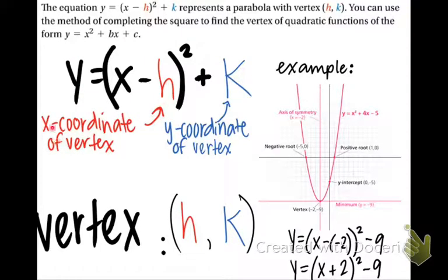The h value is the x coordinate of the vertex and the k value is the y coordinate of the vertex. Please take note that this negative sign is built into the formula. So if you see a negative number here, that h value is actually positive. Whereas if you see a positive number, take a look down here, then that h value is actually negative because technically there is a double negative instead of a positive there.